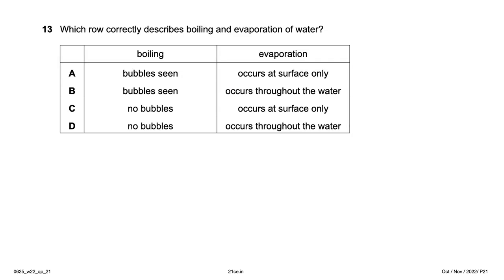Which row correctly describes boiling and evaporation of water? Evaporation occurs only at the surface, so options B and D are ruled out. Bubbles are seen during boiling, and evaporation occurs at the surface only — so option A is the right answer.